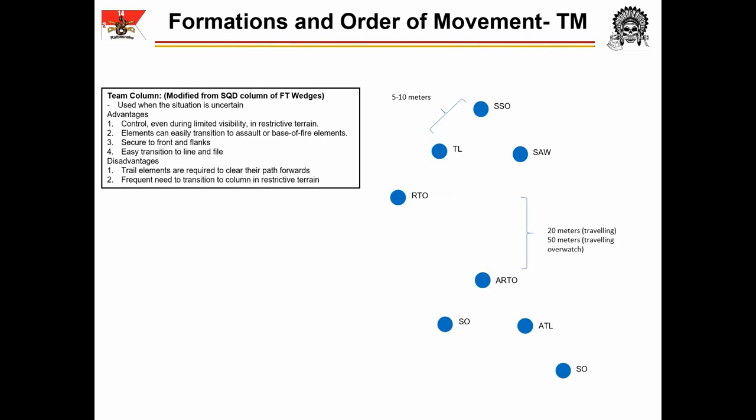There are two primary disadvantages to the team column. First, the trail elements are required to clear their own path forwards — while in file the SSO clears a path that all team members can follow, but in a column each team member is clearing their own path, which slows movement. Second, there is a frequent need to transition to file in restricted terrain. While in some restricted terrain the element will be able to move in a column, there will be instances where the terrain becomes severely restricted and the team must collapse back to a file. Any change in formation is accompanied by a temporary slowdown in movement. Overall, team column of fireteam wedges provides versatility and options to the team leader that allow him to react to multiple situations on the ground.